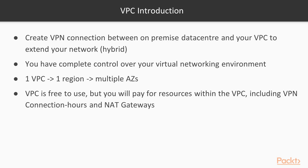You have a number of options for connecting into your VPC. For example, you can create a VPN connection between your on-premise data center and your VPC to extend your own network — this is called a hybrid cloud approach. You have complete control over your virtual networking environment, including the selection of your own IP address range, the creation of subnets, and the configuration of routing tables and network gateways, allowing you to mimic the kind of network you would create in an on-premise deployment.